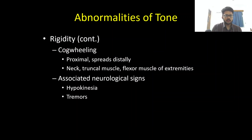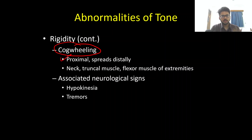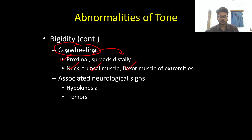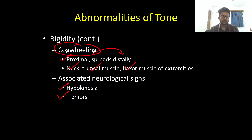Both lead pipe and cogwheel rigidity signify extrapyramidal involvement. Cogwheeling starts in the proximal musculature and then spreads distally, even though clinically we usually check it in the distal musculature. Rigidity and cogwheeling are well appreciated in the neck, truncal musculature, and flexor musculature of the extremities. Rigidity always goes along with other neurological signs of extrapyramidal involvement — hypokinesia or bradykinesia, as well as tremors, which could be resting tremors or re-emergent postural tremors.